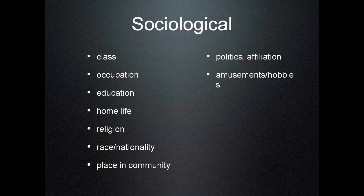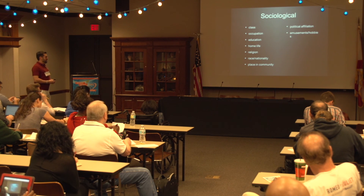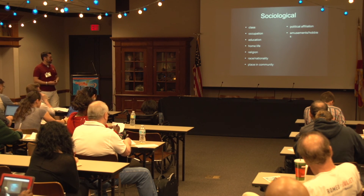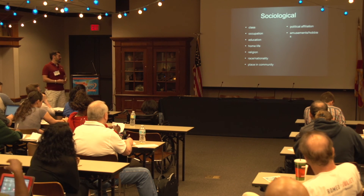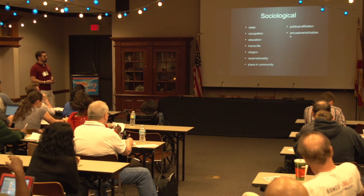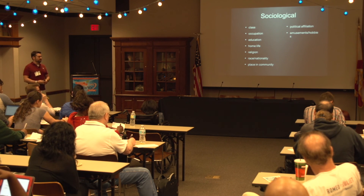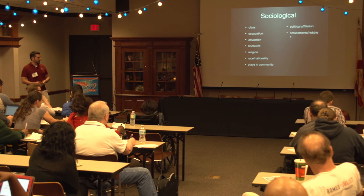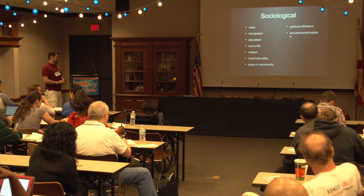Then we have the sociological character profile: social class, what they do for a living — their occupation — education level, home life, religion, race and nationality, place in the community, political affiliation, and what they do for amusements and hobbies.